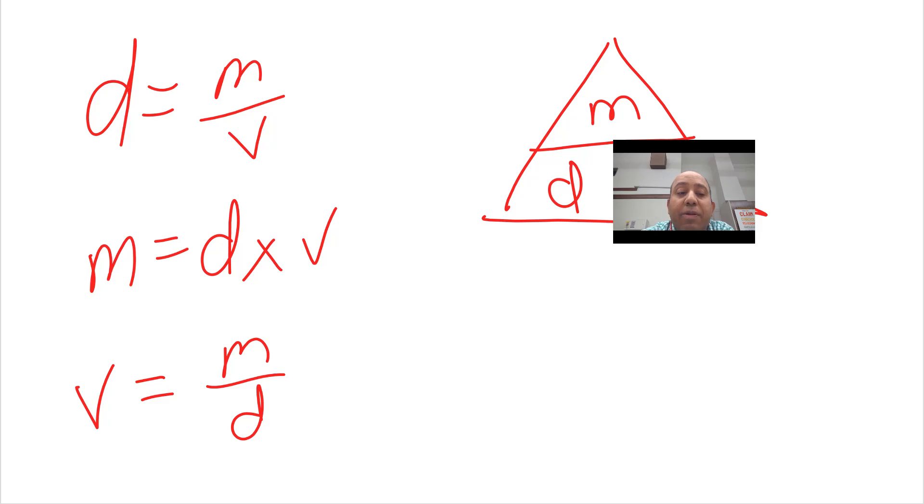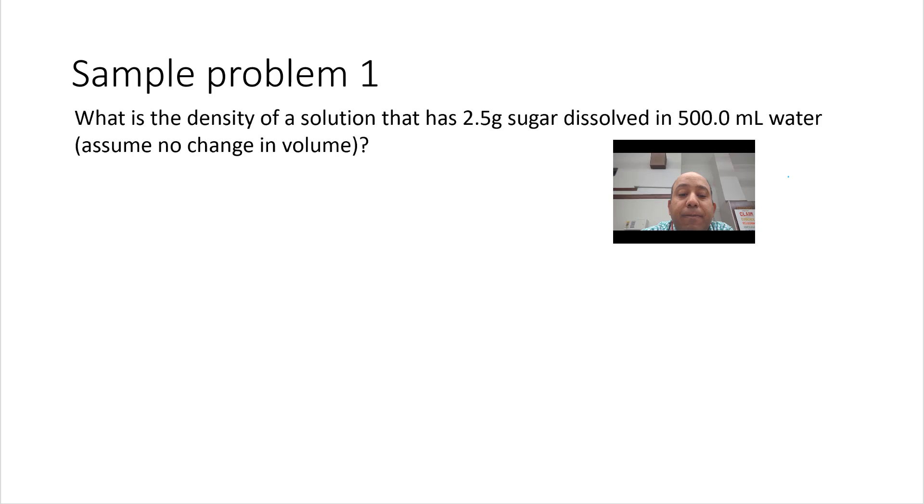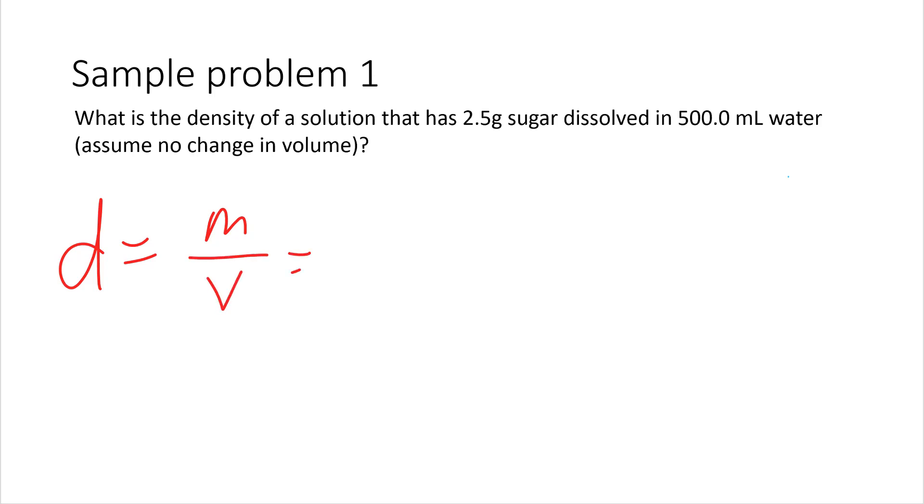So, now let's do some sample problems to see that we know how to do this. So, the first question is, what is the density of a solution that has 2.5 grams of sugar dissolved in 500.0 milliliters of water? So, remember, we're talking about the mass of the whole solution divided by the volume of the whole solution. It says here that assume no change in volume. So, I'm just going to put that on the bottom. 500.0 milliliters.